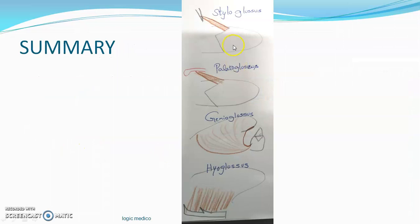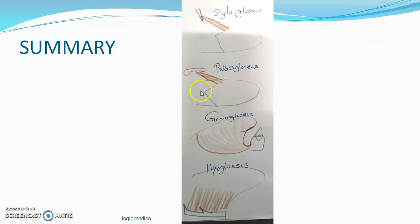In summary, there are four extrinsic muscles. Styloglossus — from the tip of the styloid process to the lateral border of the tongue, at the junction between the anterior two-thirds and posterior one-third. Palatoglossus — from the soft palate to the same area, the lateral margin of the tongue at that junction. Genioglossus — from the superior genial tubercle of the mandible to the dorsal surface of the tongue. Hyoglossus — from the hyoid bone to the lateral margin of the tongue.